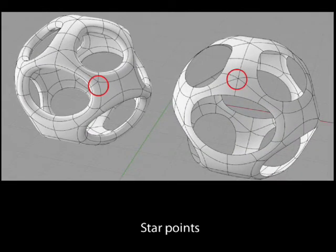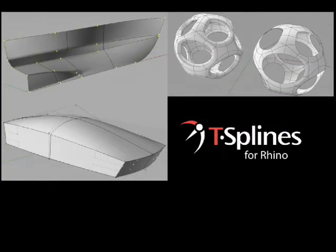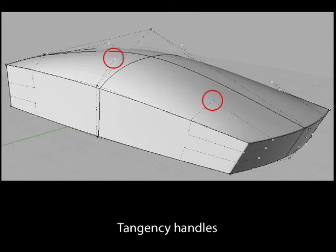Star Points allow single T-Splines to have expressive, non-rectangular shapes without resorting to trimming. These models are continuous shapes that can be edited at any time. Tangency handles control the tangency of T-Splines at creases and at the edge of the surface.